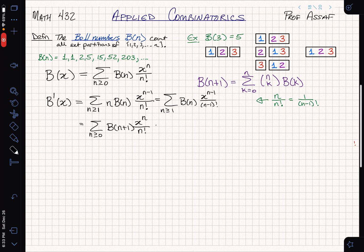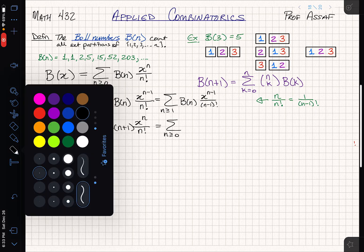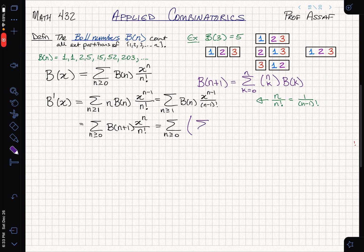That looks pretty good, except that I'm starting my indices at 1, and I've got an n minus 1. So really what I should do is change from n to n minus 1. My sum will then start at 0, and I'll get n's. Just doing this little shift of my indices, I get the sum from n greater than or equal to 0 of B(n+1) x to the n divided by n factorial. That's fantastic because now I can use my recurrence relationship.